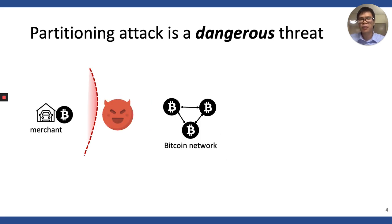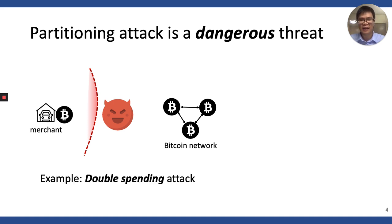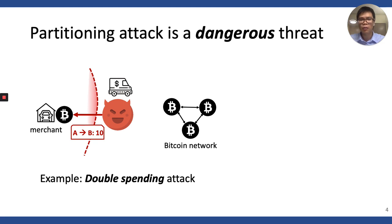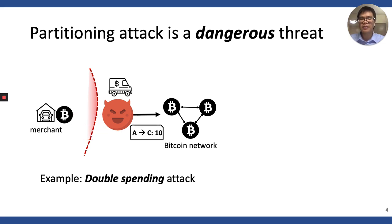What could go wrong when a Bitcoin node is partitioned? Let us take an example where the merchant on the left-hand side is already partitioned and the attacker tries to launch a double-spending attack. In this example, the attacker tricks the merchant to send the product while the transaction paying the merchant is actually paying someone else. Because all communications of the merchant to the network are under adversary control, the merchant doesn't know what happens until it is too late.